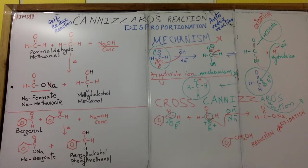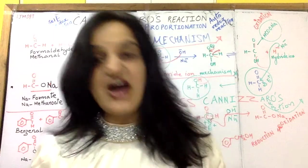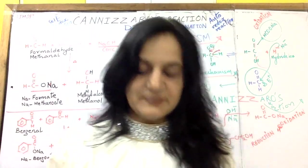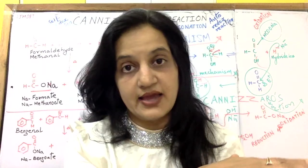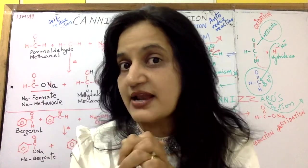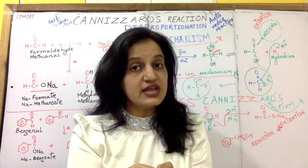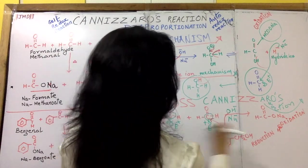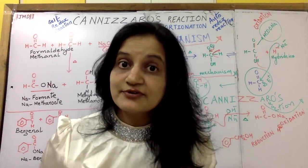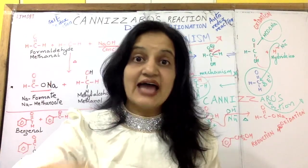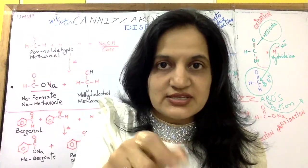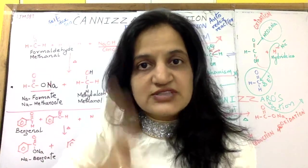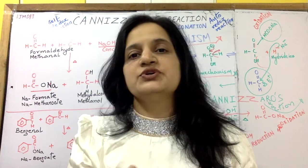So in the cross-Cannizzaro reaction between formaldehyde and benzaldehyde with concentrated NaOH and a little warming, formaldehyde undergoes oxidation and benzaldehyde undergoes reduction. The products are benzyl alcohol (from reduction of benzaldehyde) and sodium formate (from simultaneous oxidation of formaldehyde). Such a reaction where the same species undergo oxidation and reduction simultaneously is called a disproportionation reaction.